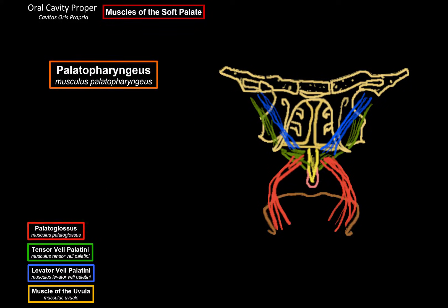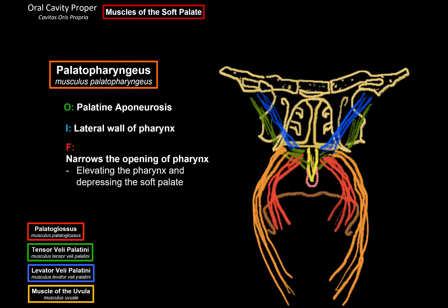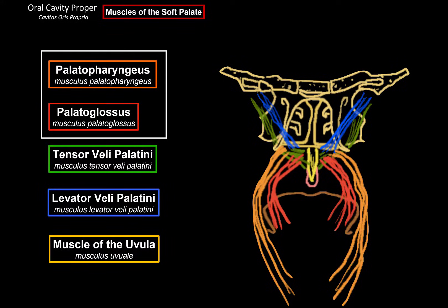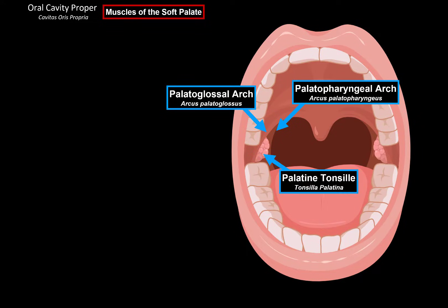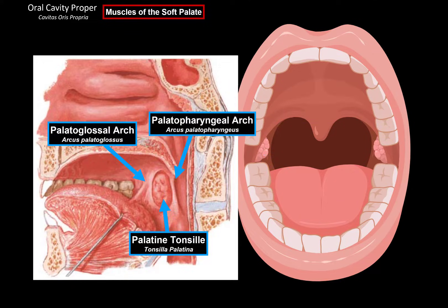The fifth muscle is the palatopharyngeus muscle, which originates from the palatine aponeurosis and inserts at the lateral wall of the pharynx. Its function is to elevate the pharynx and depress the soft palate, assisting with narrowing the opening of the pharynx to seal it off from the oral cavity. The palatoglossus forms the palatoglossal arch as it goes from the soft palate to the tongue, and the palatopharyngeus forms the palatopharyngeal arch as it goes from the soft palate to the pharynx. Between these two arches, you'll find the palatine tonsil, which helps with local immunity.